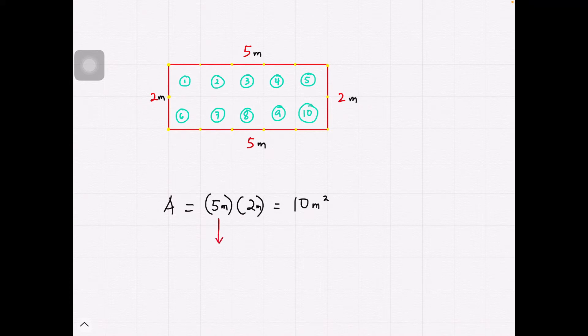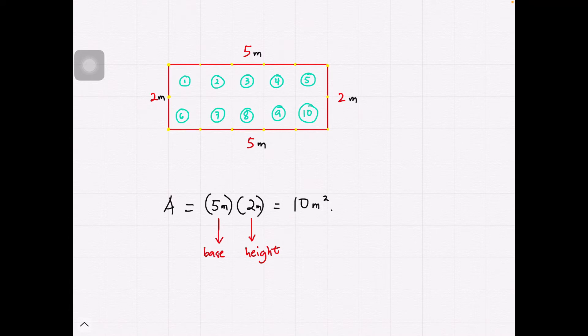Notice that whenever we want to get the area of a given shape, we'd be needing two things. That would be the base and the height. In this video, we would just need one thing, and that would be the perimeter. But careful though, the algorithm that we'll be discussing in this video would only work for regular polygons.